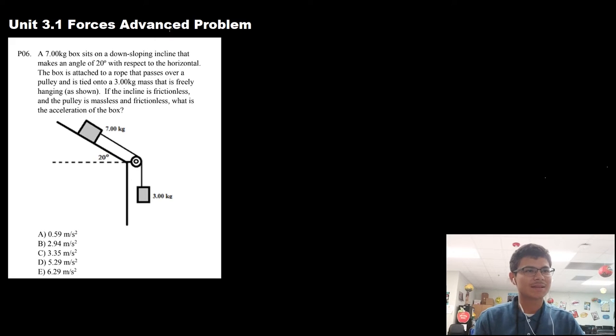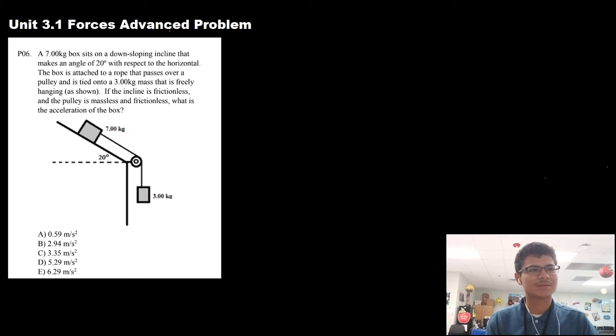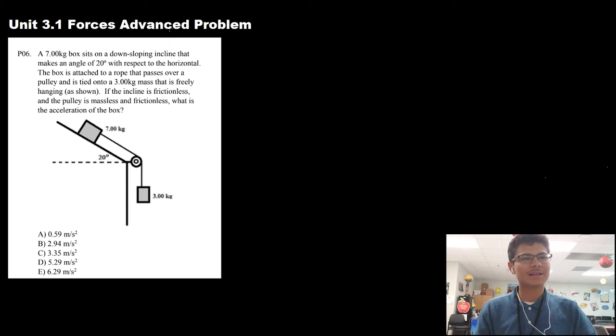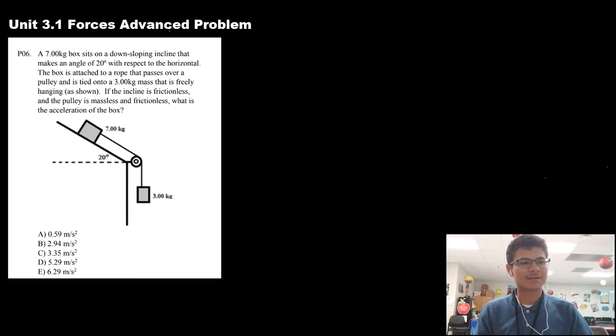The question is: a 7 kilogram box sits on a downward sloping incline that makes an angle of 20 degrees with respect to the horizontal. The box is attached to a rope that passes over a pulley and is tied to a 3 kilogram mass that is freely hanging as shown. If the incline is frictionless and the pulley is massless and frictionless, what is the acceleration of the box?